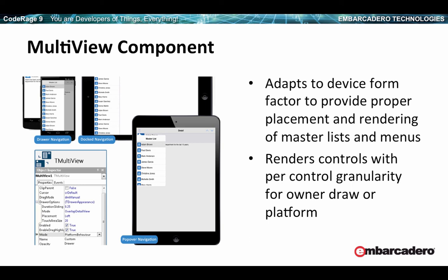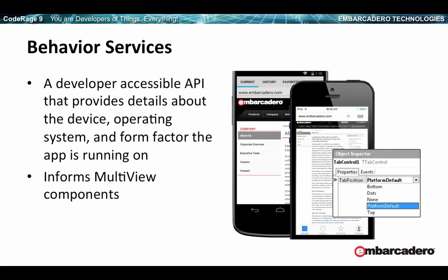An interesting feature added in XE7 is we can now render controls on a per-control basis. The granularity of whether the platform draws the control or FireMonkey draws the control can be set on each single component. We've started injecting more native platform controls into FireMonkey — asking the OS to display or draw them where required. Behavior services is also a developer-accessible API that provides all sorts of details about the device, operating system, and form factor the app is running on — really what drives the features of FireUI.